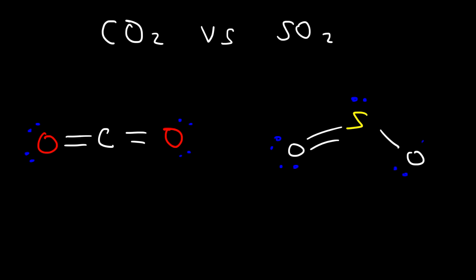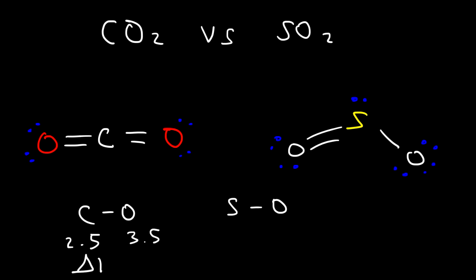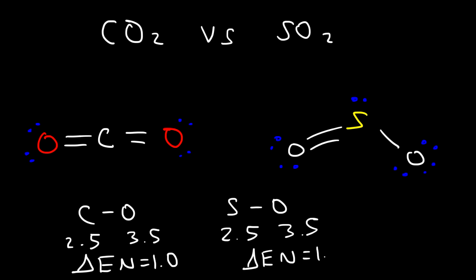So looking at these two molecules, which one is polar? The first thing you need to look at is the bond. We need to compare the carbon-oxygen bond with the sulfur-oxygen bond. We know the electronegativity values of carbon and oxygen are 2.5 and 3.5, so the electronegativity difference is 1.0. In order for a bond to be polar, the EN difference has to be 0.5 or more. The electronegativity of sulfur is also 2.5, so the sulfur-oxygen bond is polar just like the carbon-oxygen bond. In both cases, we have polar bonds.